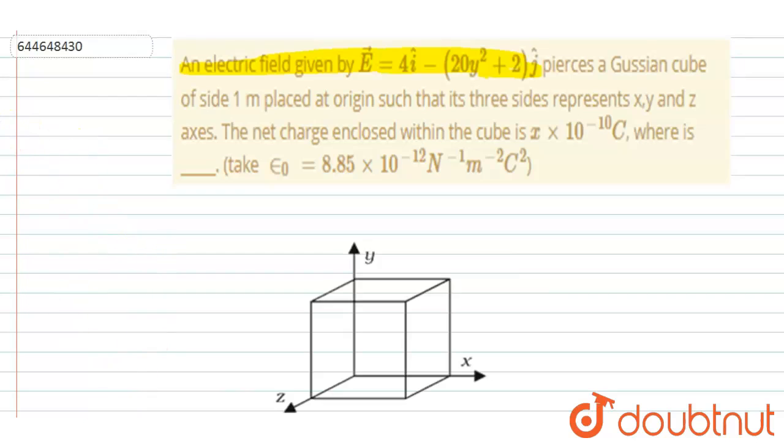Let me draw a diagram to make you understand. So because of the constant component, E dot ds net will be 0. If you see, for 2j cap and 4i cap, for this surface it will be, let's say, positive some amount, let's say it is plus a.